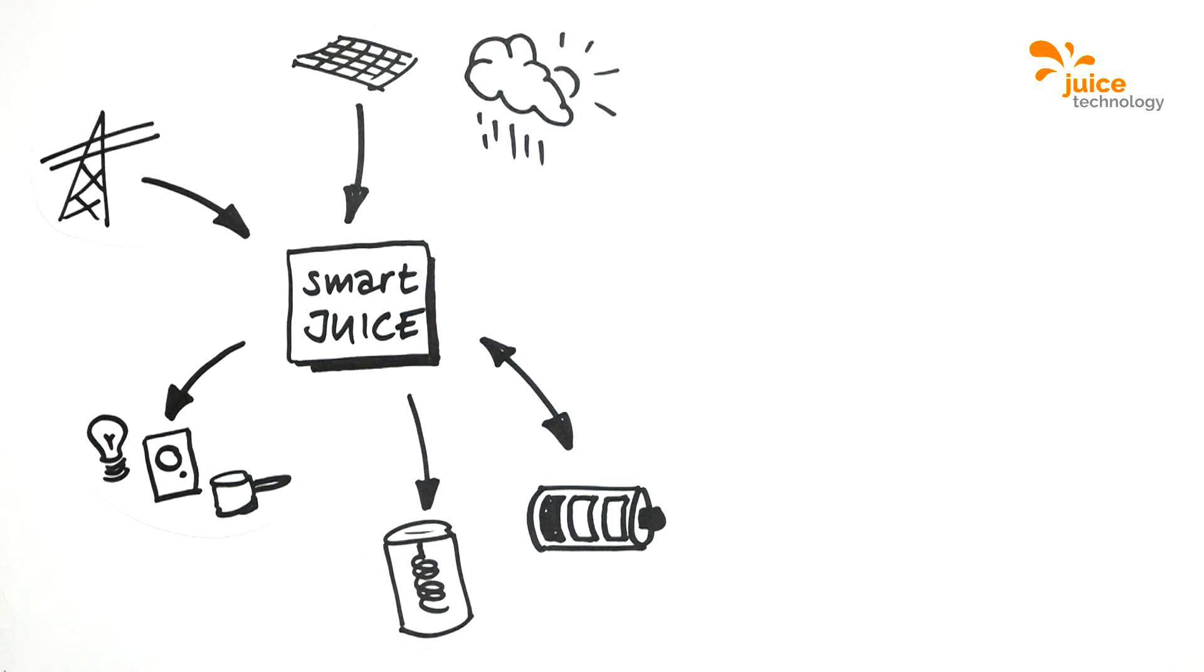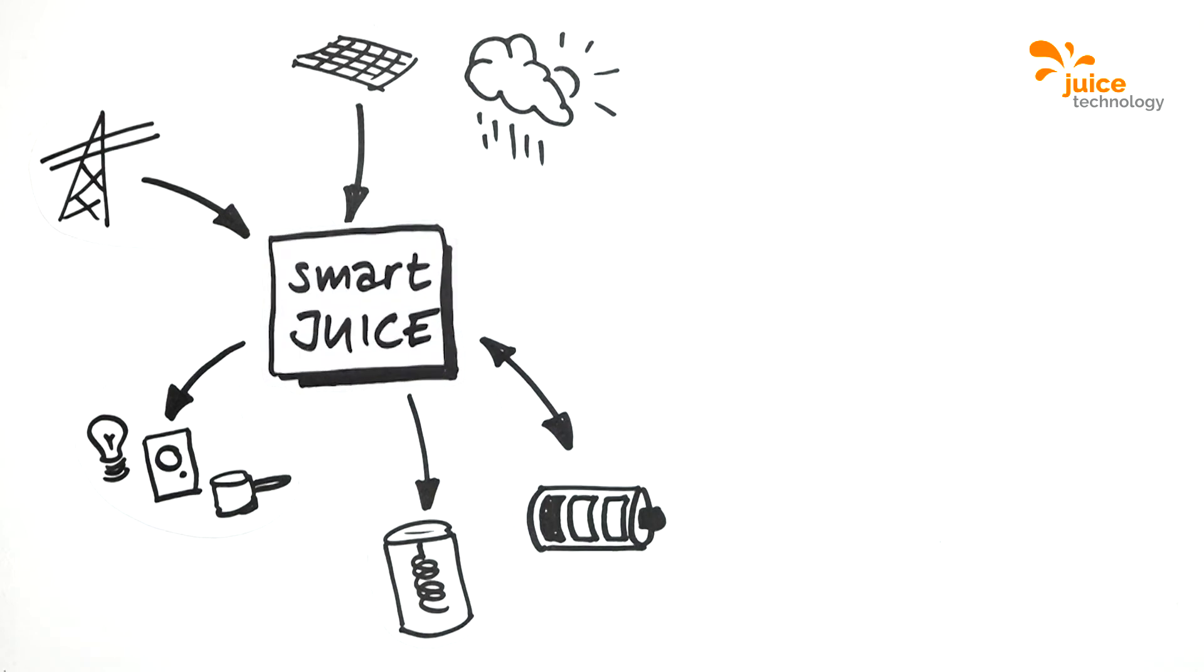That way, the fresh energy of a sunny day can be used even in poor weather or overnight. There is no need to deal with switching the battery between storage and the electricity supply yourself, however. Smart Juice takes care of it.